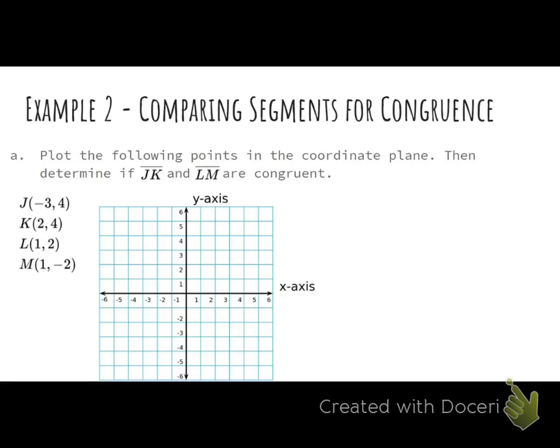So picking up on example two of 1.2 notes, plot the following points in the plane and then determine if JK and LM are congruent. Do you guys remember what it means to be congruent? Same measure, congruent. So they're going to be the same.